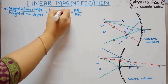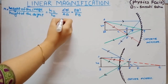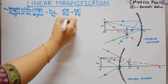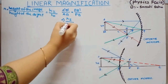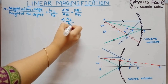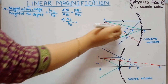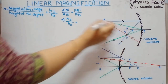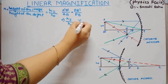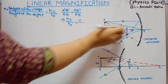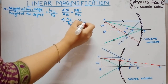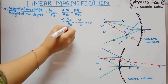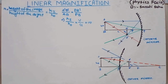A'B' equals height of the image, AB equals height of the object, PB' is the image distance, and PB is the object distance. So M equals HI by HO, which equals V by U.